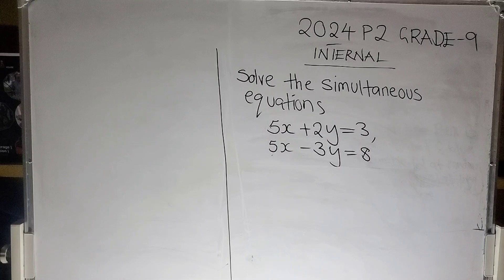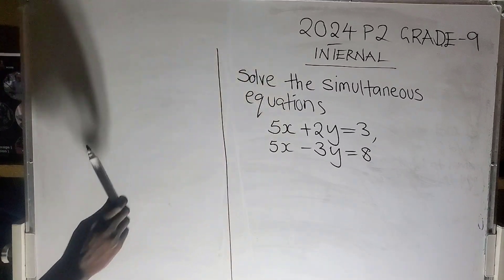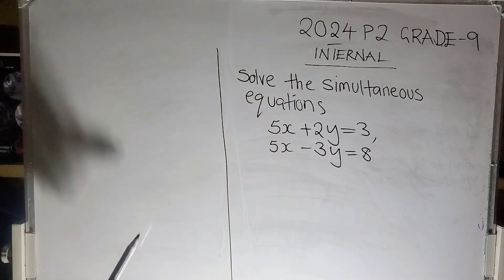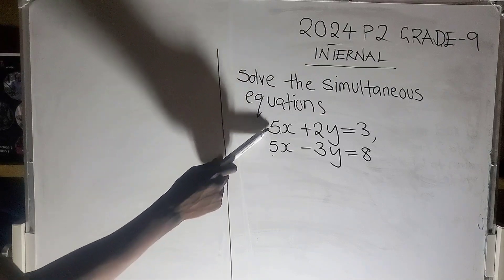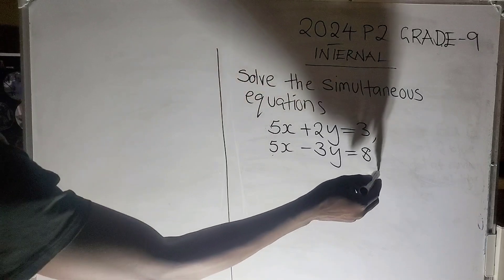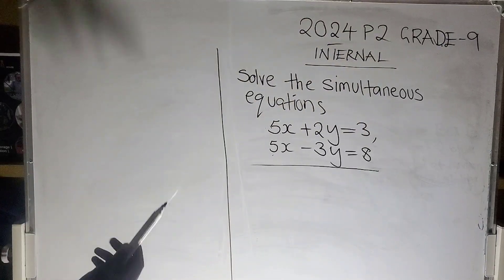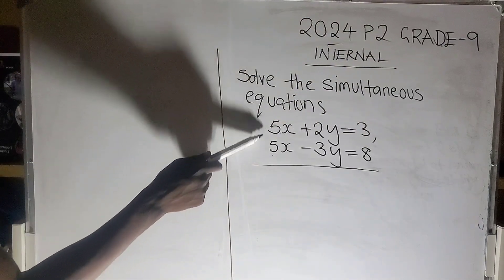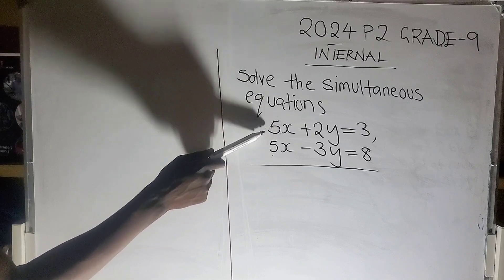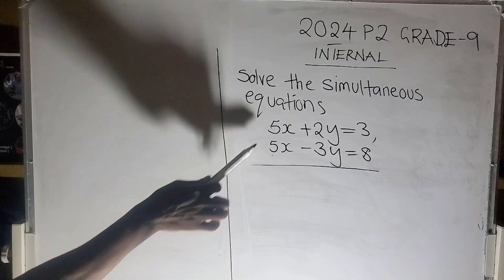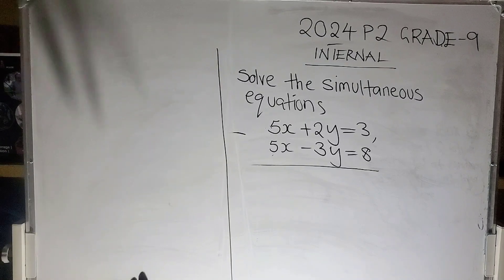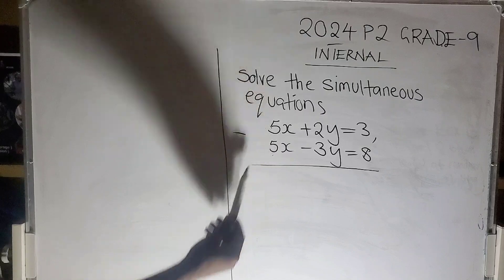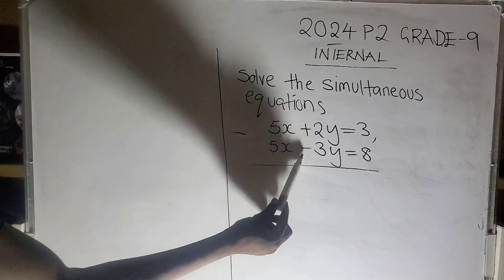Let's start with the elimination method. When you look at these two variables, we have x and y. Let's eliminate x first because the coefficients are the same. When you look at the coefficient of x, it is positive 5 and positive 5. Same signs, so we're going to subtract. Same signs we subtract, different signs we add. So it'll be 5 minus 5, which gives us 0.